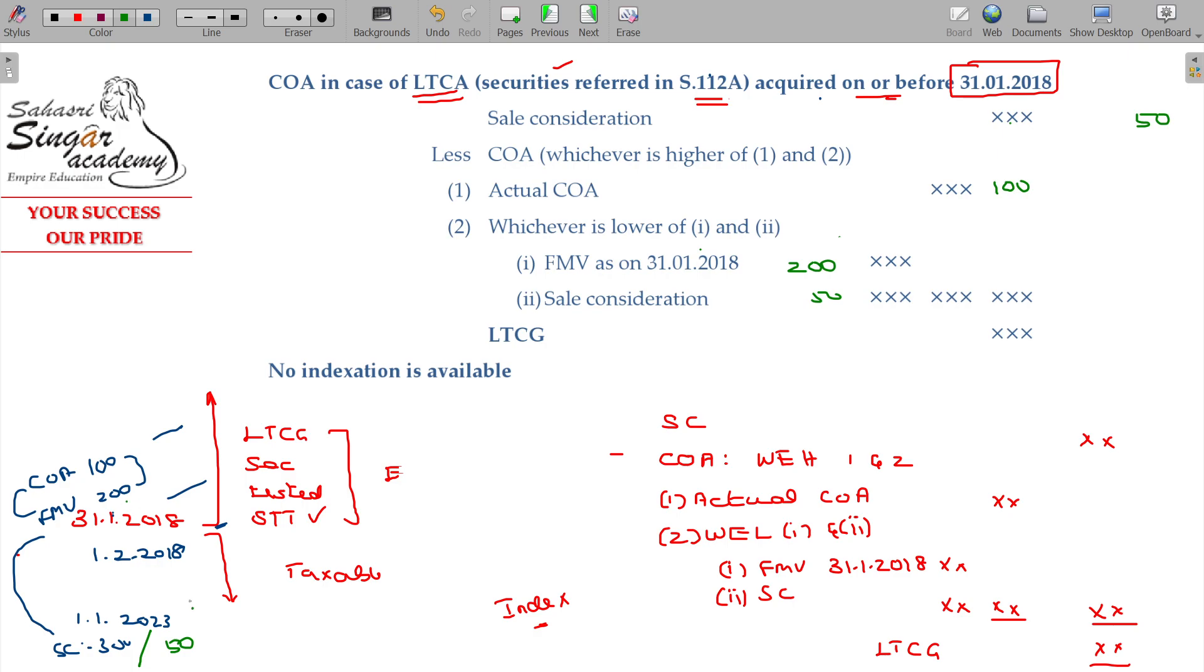In the difference, sale consideration minus cost of acquisition as on the date of presentation of the bill in the budget in the parliament, the value we are getting: 50 minus 200 = minus 150. Long-term capital loss.